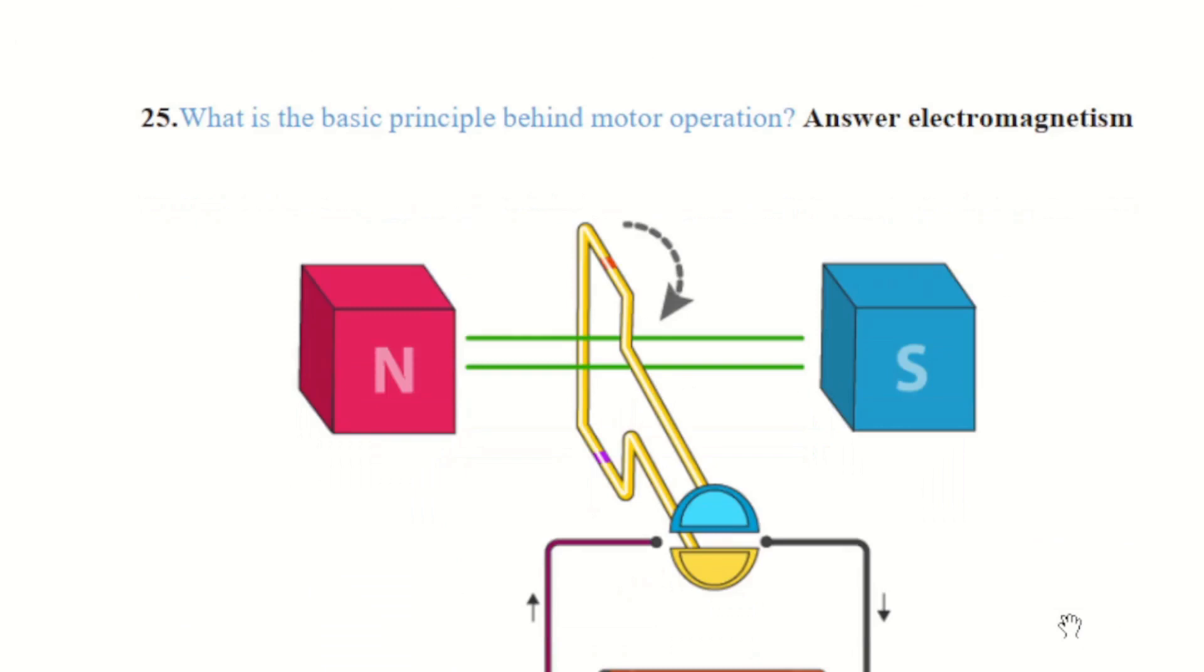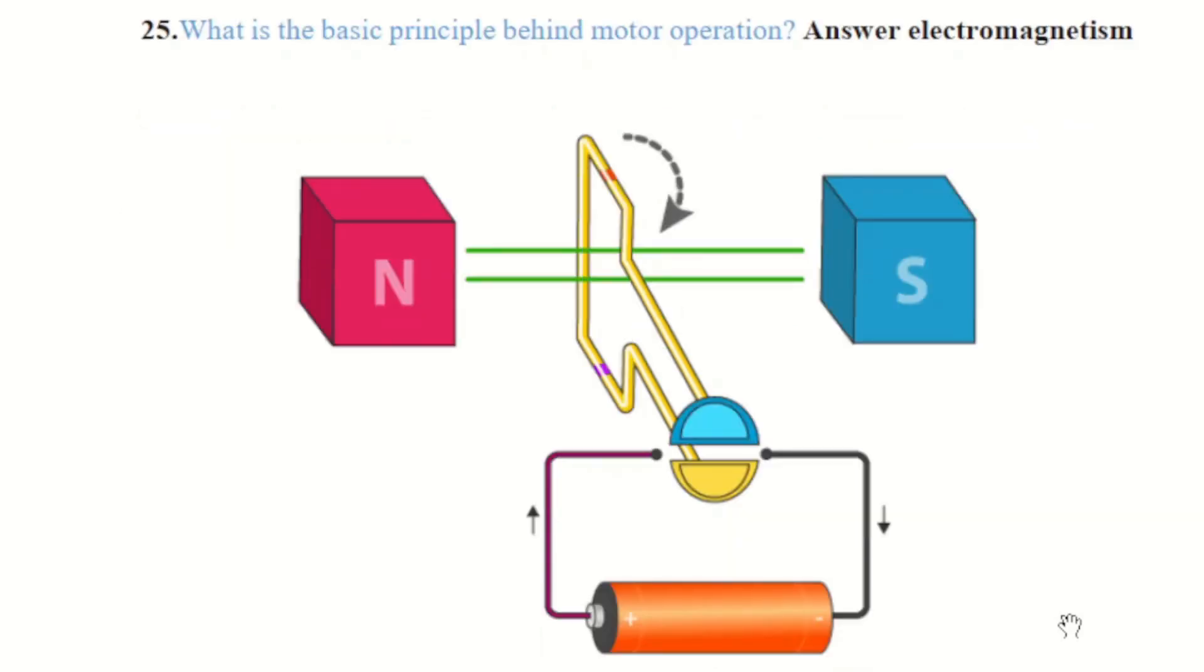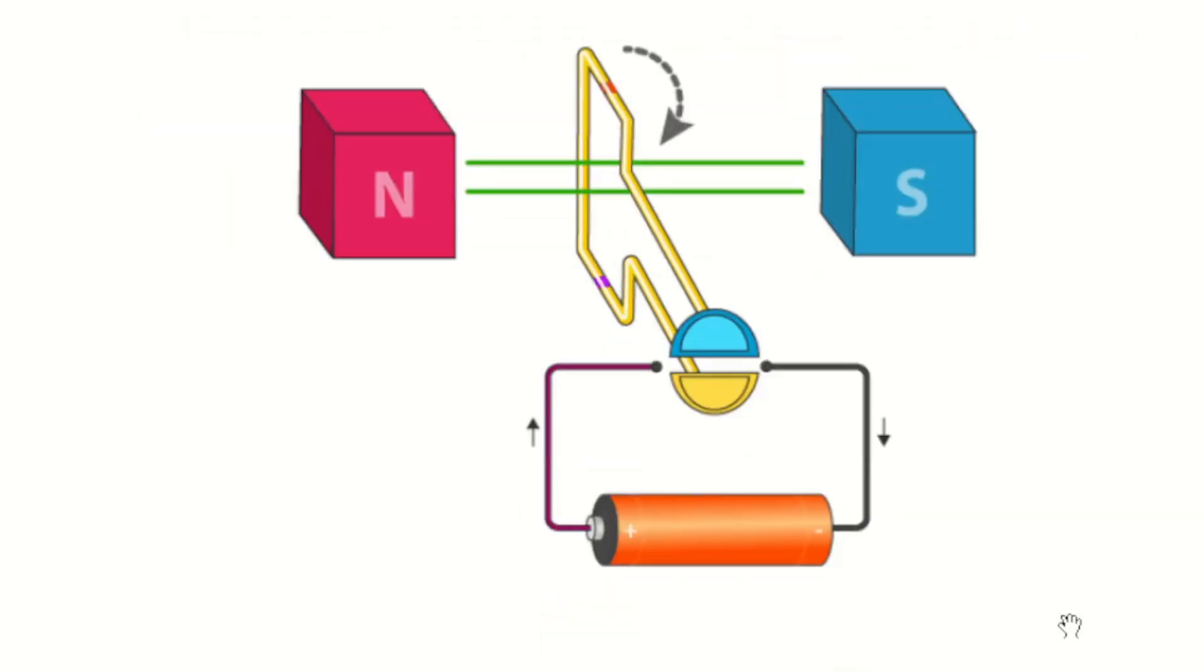25th question is asking about what is the basic principle behind motor operation. You can see there is the electromagnetism by the north to south pole. The principle of electric motor is based on the current carrying conductor which produces a magnetic field. A current carrying conductor is placed perpendicular to the magnetic field that it is expressed as a force.